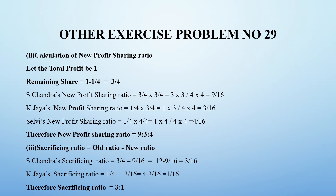1 minus 1 by 4 is equal to 3 by 4, which is the remaining profit. The remaining profit is shared in the old ratio by old partners. Old profit sharing ratio multiplied gives the new profit sharing ratio for old partners. S. Chandra is one of the old partners - the old ratio is 3 by 4 and the remaining share is 3 by 4. So multiplication: numerator into numerator, denominator into denominator. 3 into 3 is 9, 4 into 4 is 16. So 9 by 16 is the new profit sharing ratio of S. Chandra.